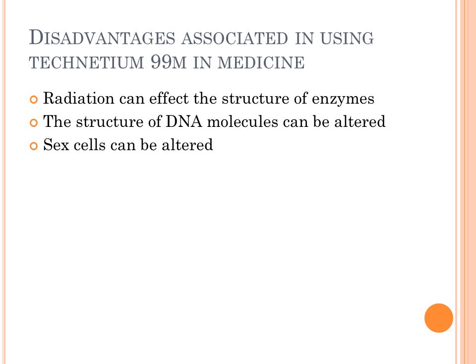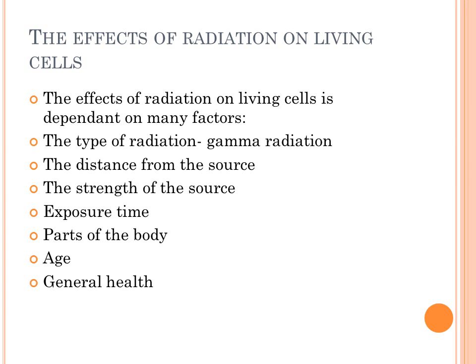Lastly, a very important issue to discuss is the effects of radiation on living cells. The effects of radiation on living cells are dependent on many factors. One of these is the type of radiation — here, that is gamma radiation. Other things to consider are the distance from the source, the strength of the source, and the exposure time on parts of the body. This is very important to consider when using this radioisotope, as there are many organs which are more sensitive than others — for example, the circulatory system, the eyes, the ovaries, and the testicles.